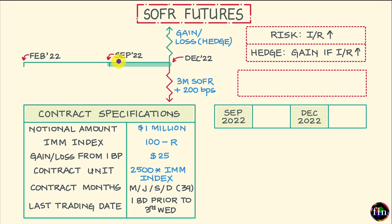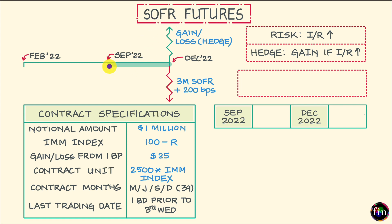The third Wednesday falls on 21st September 2022, so the LIBOR fixing would have happened on 19th September 2022. The 19th of September would have been the last trading day for that contract and final settlement would have happened at the beginning of the interest period. For three-month SOFR futures, note that the trading of these futures goes well beyond the contract month.